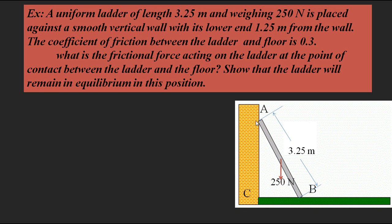The ladder is placed against a smooth vertical wall, meaning there is no friction between the wall and the ladder. The lower end is 1.25 meters from the wall. The coefficient of friction between the ladder and the floor is 0.3. We need to find: (1) the frictional force acting at the contact between the ladder and the floor, and (2) show that the ladder remains in equilibrium.